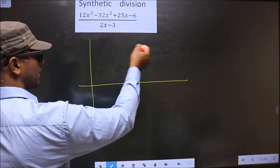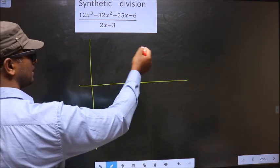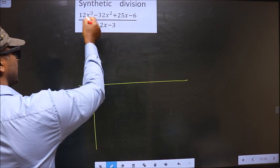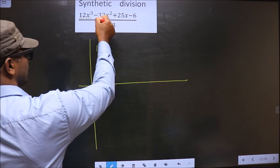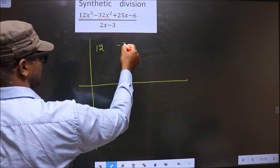Here we should write coefficients taken from the numerator. Starting with x cube coefficient, that is 12. Next, x square coefficient, that is minus 32.